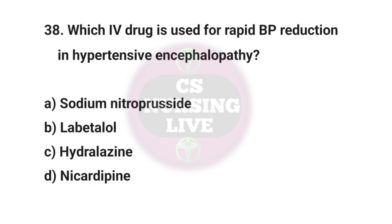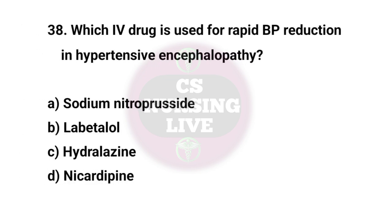Question No. 38. Which IV drug is used for rapid BP reduction in hypertensive encephalopathy? Right answer is A. Sodium nitroprusside.